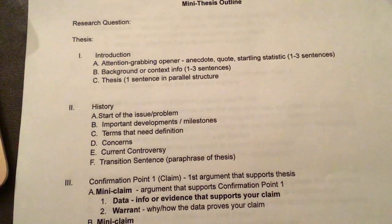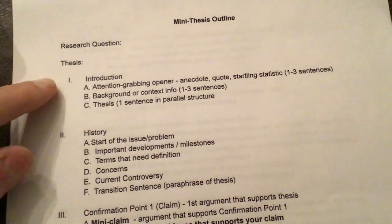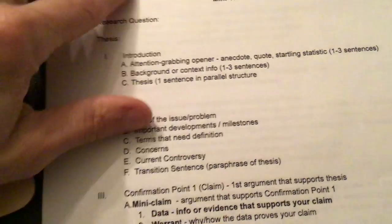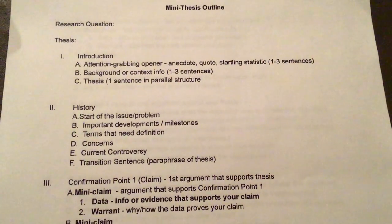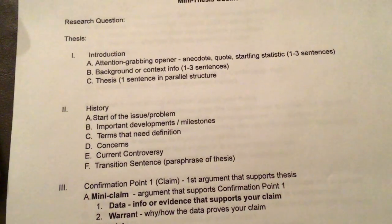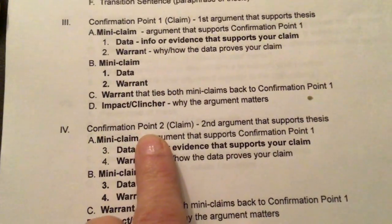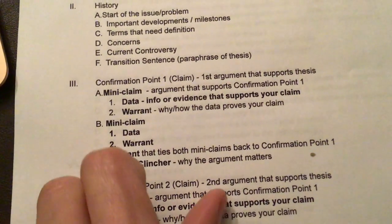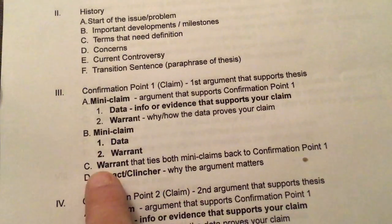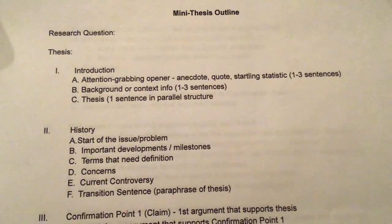You have the Roman numeral shell here, but you may have to do sub-points. You just need to make sure on an outline that all your types of points align — like Roman numerals I, II, III, IV line up; ABCs line up; 1, 2, 1, 2 line up. This is a template, so it's not going to match exactly what you have. All of you will have these overall categories — introduction, history, confirmation point one, confirmation point two — but what comes underneath it you can fill in differently.